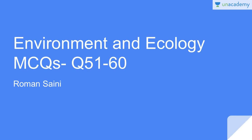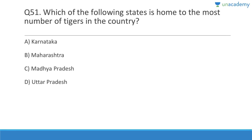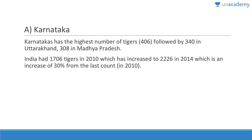Questions 51 to 60. The best way to learn according to science is in a question-and-answer format. Question 51: Which state is home to the most number of tigers? Answer is Karnataka. Karnataka has the highest number of tigers — around 406, followed by 340 in Uttarakhand and 308 in Madhya Pradesh. Currently India has around 2,300 tigers, an increase of 30% from the last count.